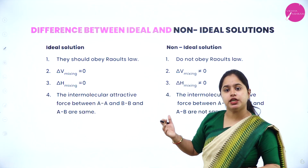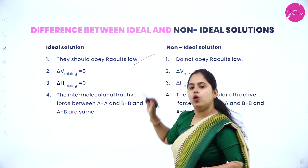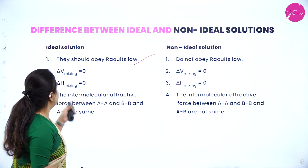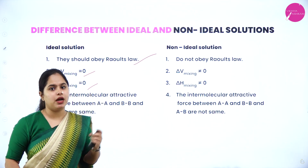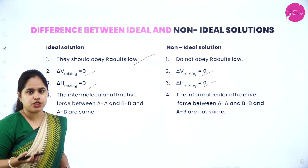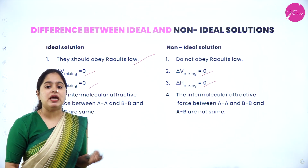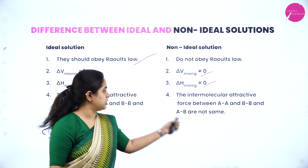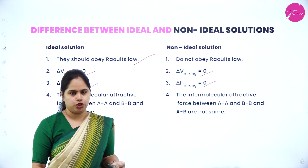To quickly differentiate: ideal solutions obey Raoult's law; non-ideal solutions do not. For ideal solutions ΔV = 0 and ΔH = 0 — no change in volume or enthalpy. For non-ideal solutions there is a change in both. In ideal solutions, AA, BB and AB interactions are all equal; in non-ideal solutions the intermolecular attractive forces AA and BB are not equal to the AB interactions.